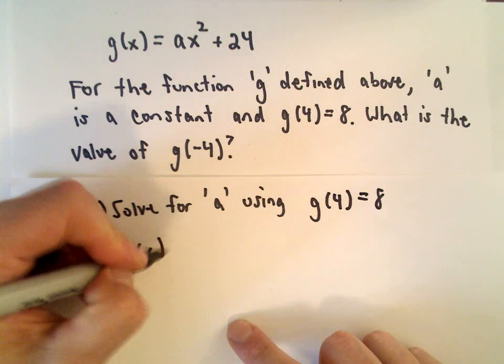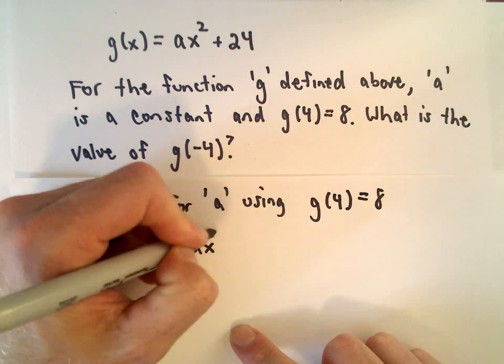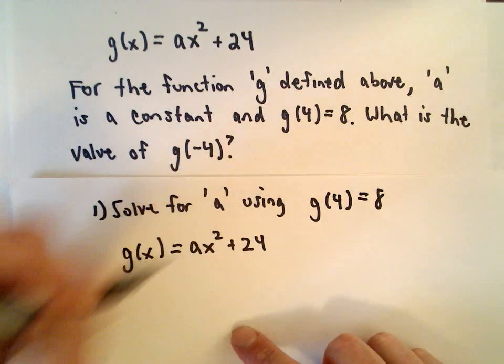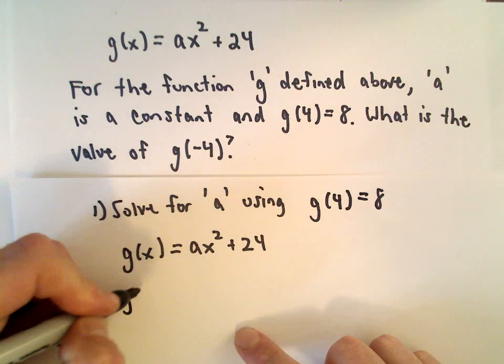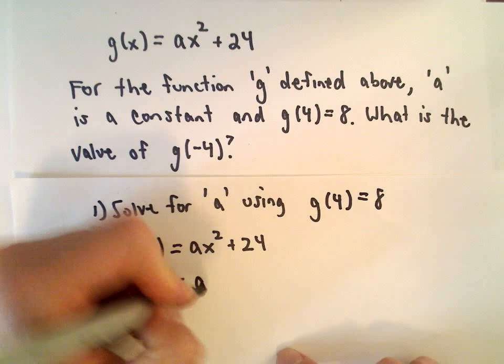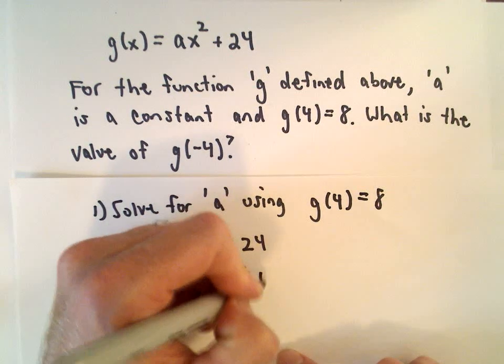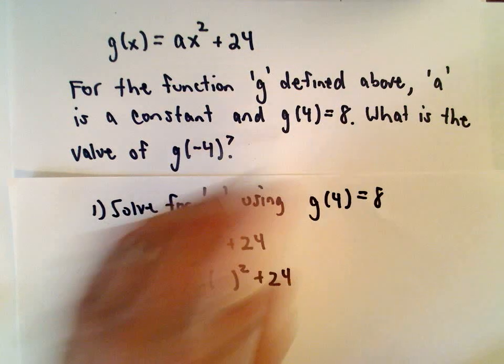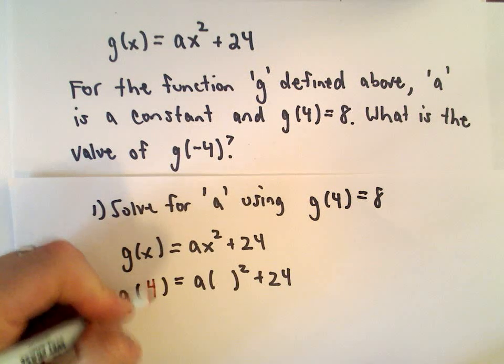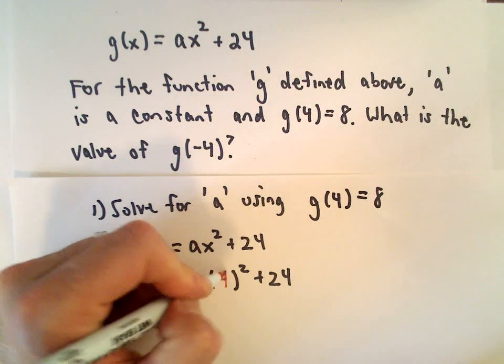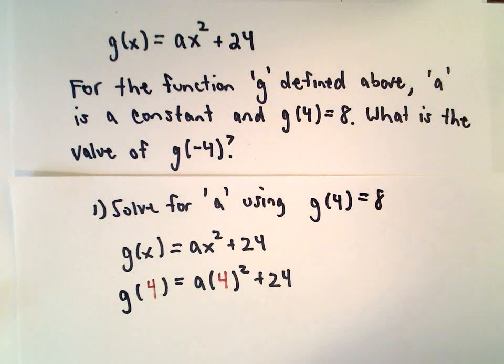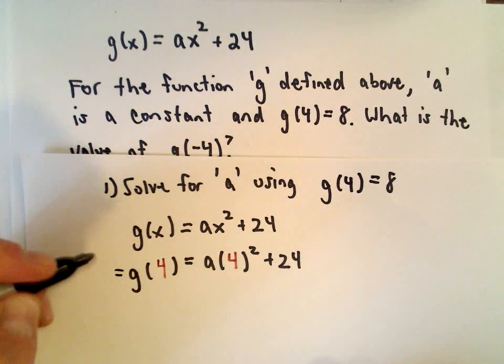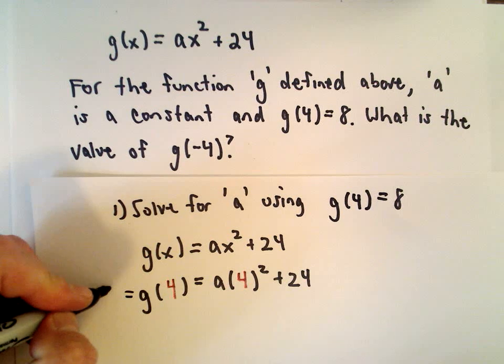So again, we've got g(x) equals a multiplied by x squared plus 24. So now I'm just going to substitute in the fact that we're evaluating g(4), so I'm replacing x with positive 4, and we're given that that equals positive 8.